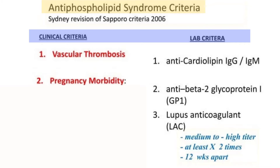In the diagnostic criteria, at least one clinical criterion plus at least one laboratory criterion is required. For the clinical criteria, we look for a vascular thrombotic event or pregnancy-associated morbidity and complications. For the laboratory criteria, we look for three antibodies: anti-cardiolipin antibody, anti-beta-2 glycoprotein 1 antibody, and lupus anticoagulant.